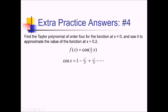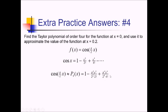Next, we plug in pi over 2 times x instead of just x — this will be my fourth-degree polynomial, so I'll stop at fourth order. Replacing all x's with pi over 2 times x: we get 1, then minus pi squared x squared over 2 squared times 2 factorial in the denominator, then plus pi to the fourth x to the fourth over 2 to the fourth times 4 factorial. That's it — I just needed a fourth-order polynomial, and there it is.